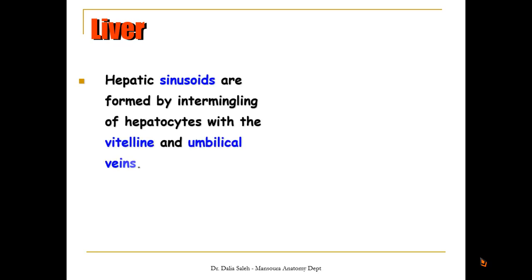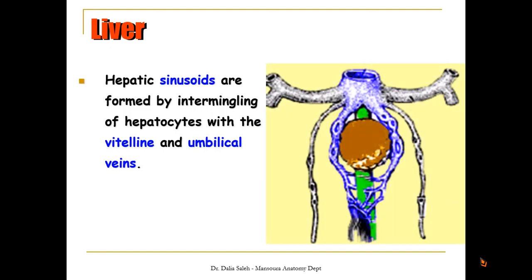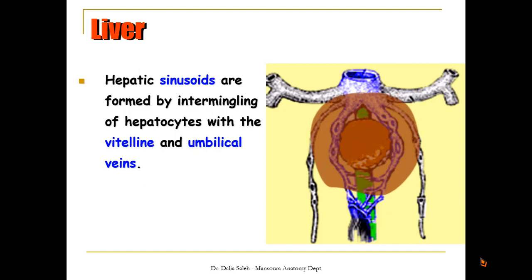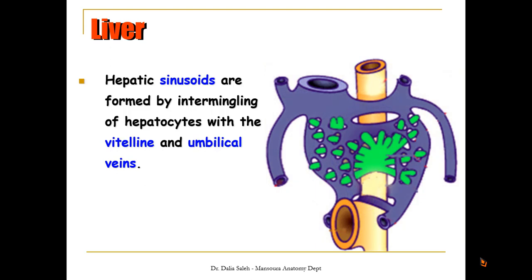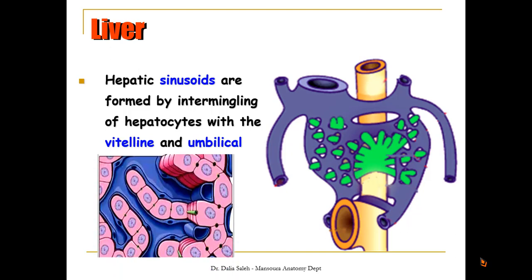Inside the liver, we have hepatic sinusoids. They are formed by intermingling of the growing hepatocytes with the vitelline and umbilical veins. In this diagram, we can see the liver bud. This is the sinus venosus, which empties into the heart and receives veins from the liver bud — the vitelline veins and the umbilical veins. So when the liver bud grows, the hepatocytes invade the vitelline and the umbilical veins and break them down into hepatic sinusoids, which lie between the hepatic cords.